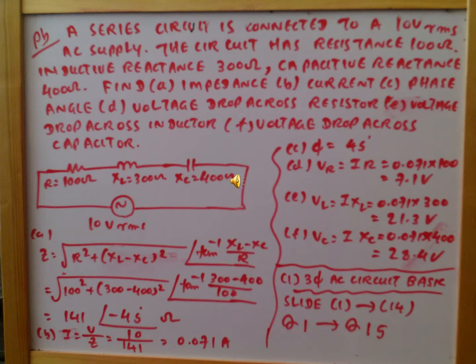In this problem, 100 ohms, 300 ohms, and 400 ohms are connected in series, and the whole combination is connected to a 10 volt RMS supply. Firstly, we have to calculate the impedance.